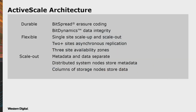Some of the key things I'm going to be talking about in the architecture: what our erasure coding is and how it works, how our data integrity works — a couple of trademark names there — how we scale up in a single site, how we scale out in a single site, how we replicate, and how we scale across what we call an availability zone, which is a three-site geo-erasure-coded storage.